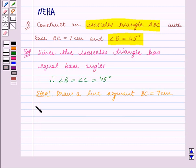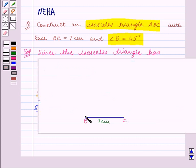Step 2: At B construct angle PBC which is equal to 45 degrees. So at B we will construct an angle PBC which is equal to 45 degrees. This is the angle PBC which measures 45 degrees.